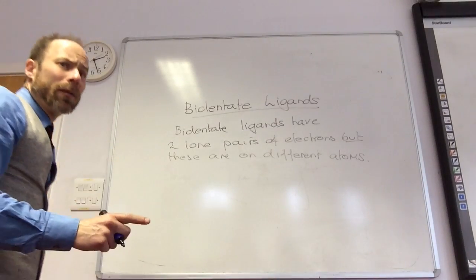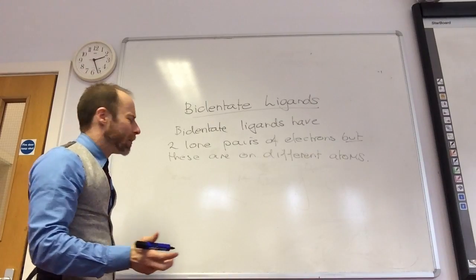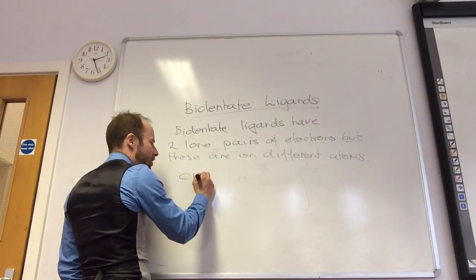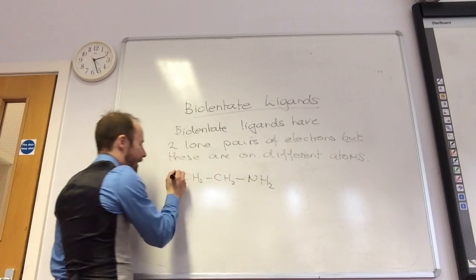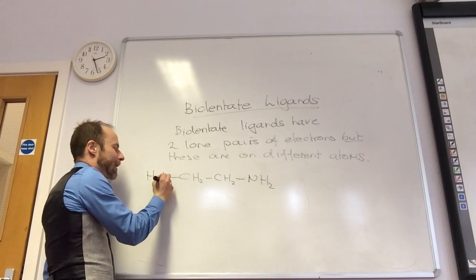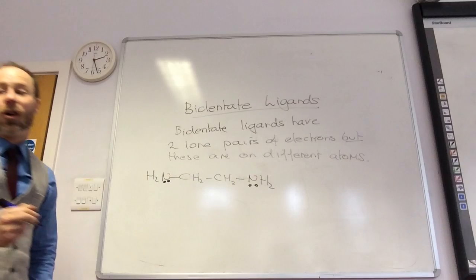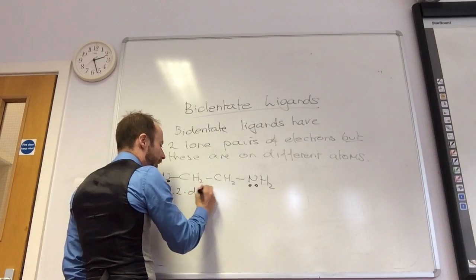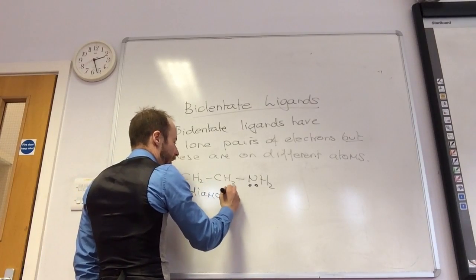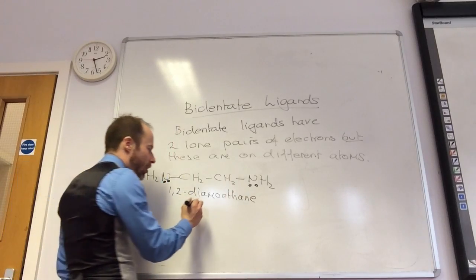So your most common type of bidentate ligand, which you've come across, they're going to be a lot of organic compounds. So you have your carbon CH₂, CH₂, and then on one end you have an amine group, and also on the other end you have an amine group. And each nitrogen has got a lone pair of electrons. So this is called 1,2-diaminoethane.